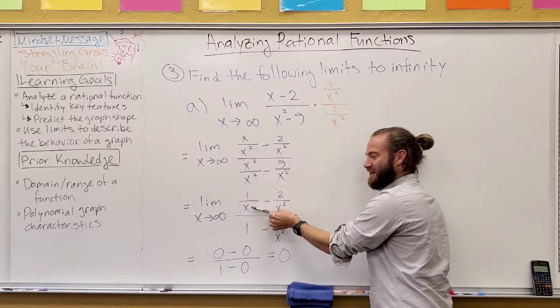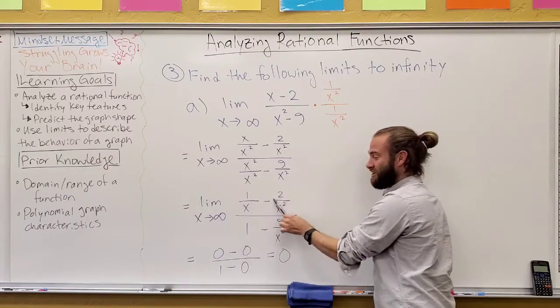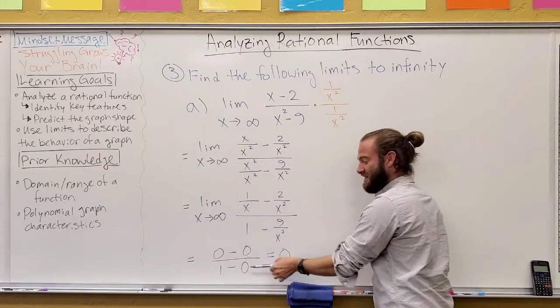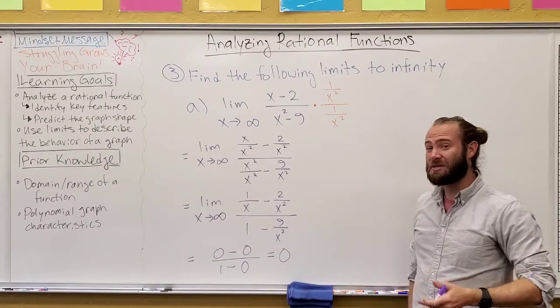You can see here, a couple of these things simplify, and we know as x gets infinitely large, this goes to zero, and so does this and this. And if we simplify that all out, the actual end limit becomes zero.